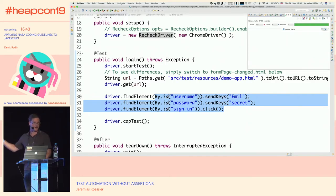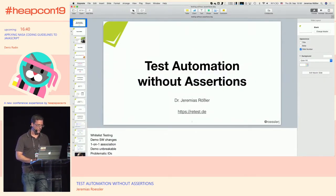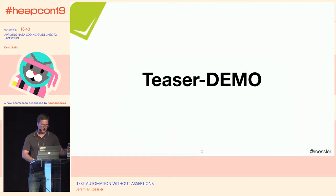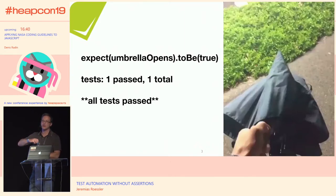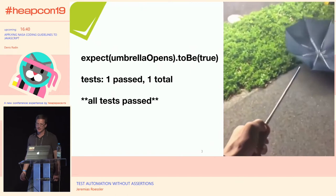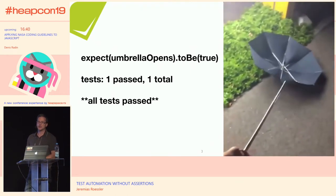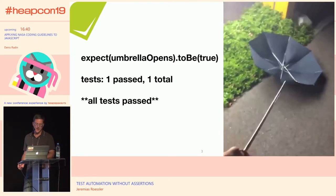I change something that is important for the user and the test fails. I change something that the user doesn't care about and the test still passes. This is what we would like to see, and this is no fake — this is the real thing. This is comparable to testing an umbrella: you could say the umbrella works if it opens, but the test would still be green even if the umbrella opened broken — it's not what the user intended. This is how current assertion-based testing looks and we want to change that.